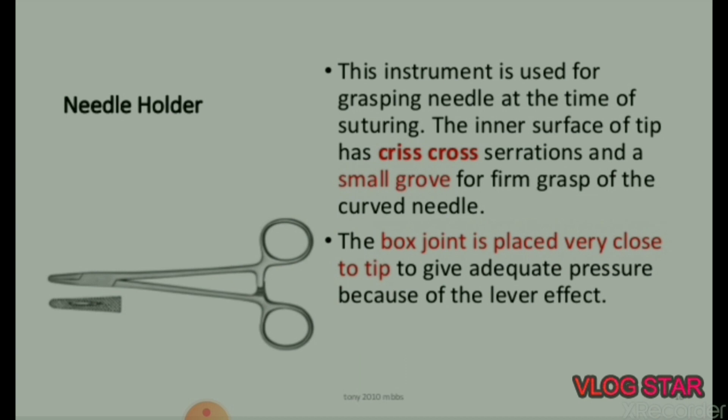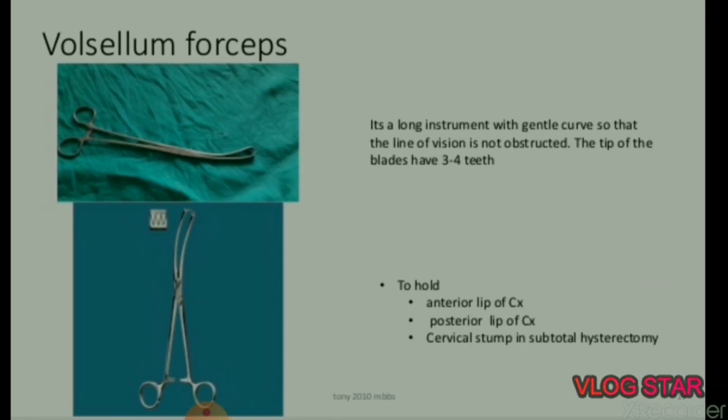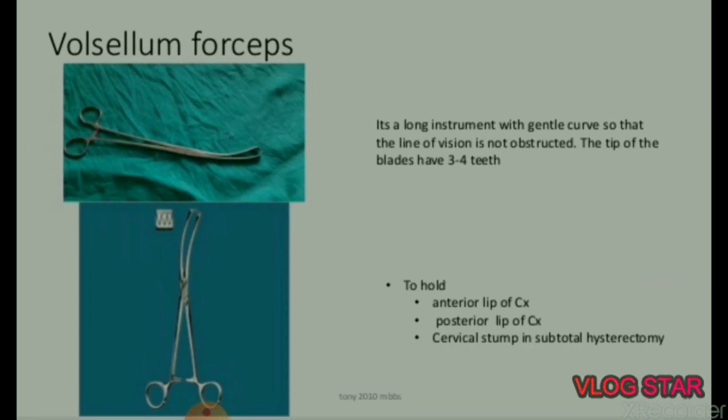Needle holder: this instrument is used for grasping the needle at the time of suturing. The inner surface of the tip has crisscross serrations and a small groove for firm grasp of the curved needle. The box joint is placed very close to the tip to give adequate pressure because of the lever effect.